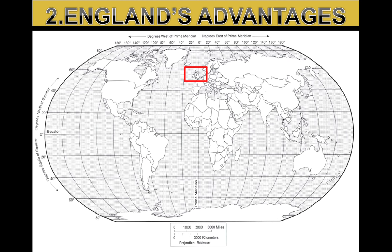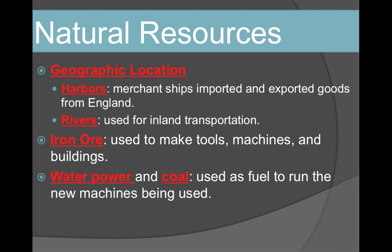Moving on to section two: England's advantages — the reasons why the Industrial Revolution started in England. Looking at the map, England is in a perfect location, right in the middle. England is a large island surrounded by water, which means lots of trade. They have Europe around them, Africa around them, and cross the Atlantic — North America. They are in an absolutely perfect location for trade.